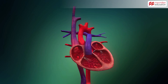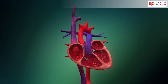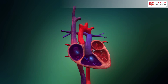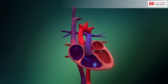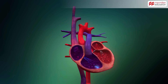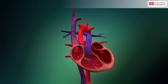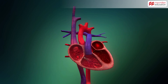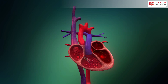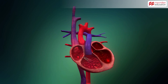The atria and the ventricles contract rhythmically to make the blood flow. The two ventricles have relatively thicker walls than the two atria because blood is pumped out of the heart at greater pressure from these chambers as compared to the atria.